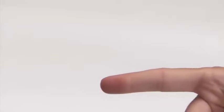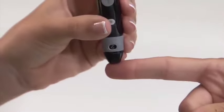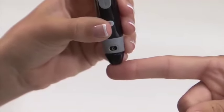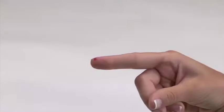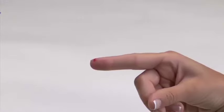Use the lancing device to obtain a blood sample. Hold the lancing device firmly against the site and press the lancing button. Lift the lancing device and be careful not to smear the blood sample.